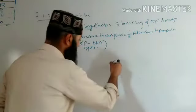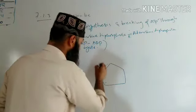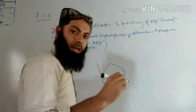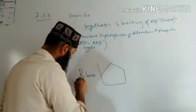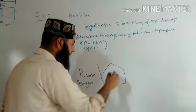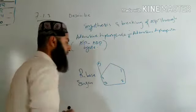This is the structure of ATP. In ATP there is a sugar known as ribose sugar, which has 5 carbons: 1, 2, 3, 4, and 5. It is a modified form of the nucleotide.